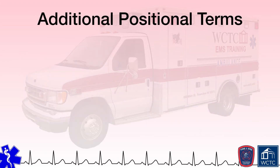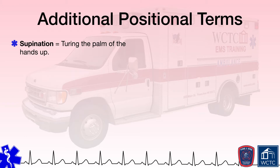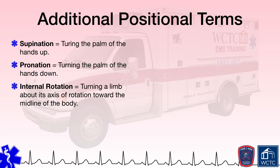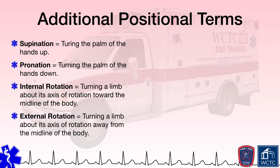There are also some additional positional terms to define. To supinate is to turn the palm of the hands up, and to pronate is to turn the palm of the hands down. When rotating a limb, internal rotation occurs when the limb is rotated toward the midline, and external rotation is when the limb is rotated away from the midline of the body.